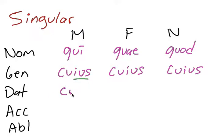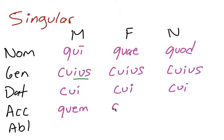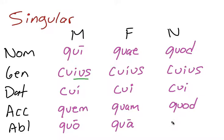Dative is cui — some people pronounce this 'cui,' I pronounce it 'cui.' Accusative: quem, quam, quod. Ablative: quo, qua, quo. So the full singular paradigm is: qui, quae, quod; cuius, cuius, cuius; cui, cui, cui; quem, quam, quod; quo, qua, quo.